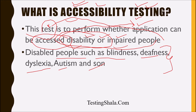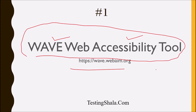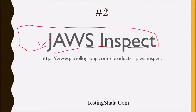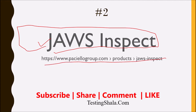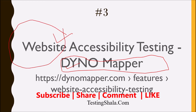The first tool is the Web Accessibility tool. We can use a URL to find out more about this web accessibility tool. The second tool is JAWS Inspect, which is available for accessibility testing. The third is Dyno Mapper — another important accessibility testing tool, especially used for web applications.